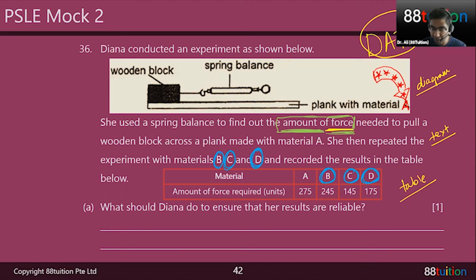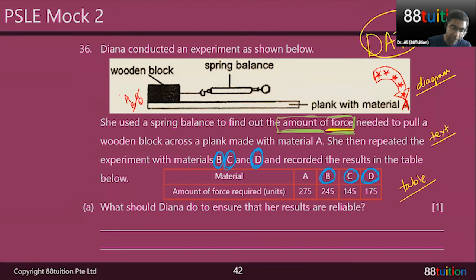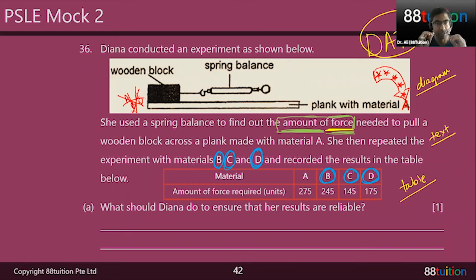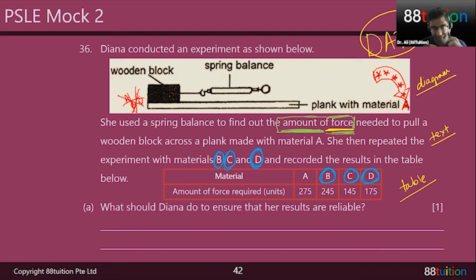You can translate the text to the diagram so you know that she's changing the plank — from material A to material B to material C — not the wooden block. Some of you may think the wooden block is being changed to A, B, C, D — no. Please be clear: this is reading the information to understand the question first, and then carrying on. She changed the material of the plank.